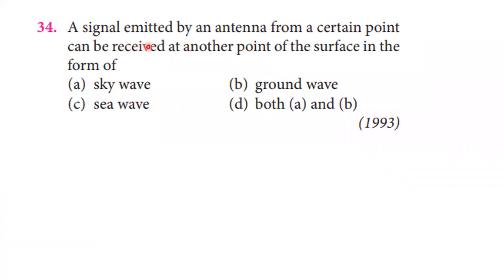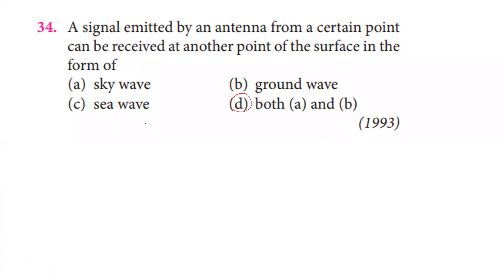A signal emitted by an antenna from a certain point can be received at another point on the surface in the form of a link. This can occur via the ground wave method or the sky wave method. So the answer is both ground wave and sky wave — option A and B are both correct.